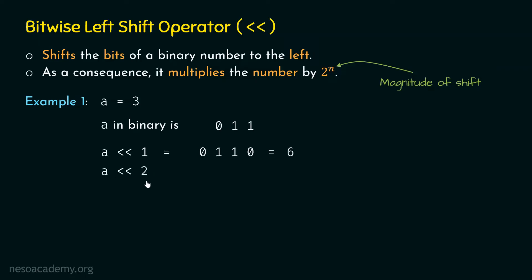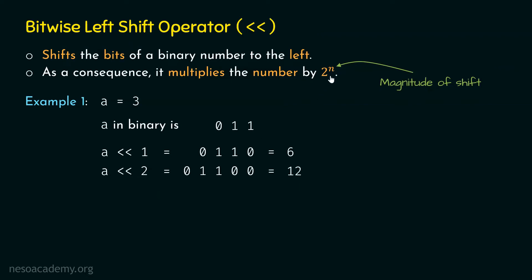Now let's perform the operation a left shift 2. This time we want to shift the bits of this binary number towards left twice. After shifting, we get 01100, which is equal to 12 in decimal. The magnitude of shift is 2, so n is replaced by 2, and 2 to the power 2 is 4. We multiply 3 by 4 and get 12 as the result.